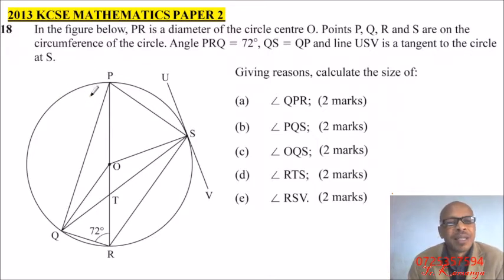So the question says, in the figure below, PR is the diameter of the circle center O. So we have our PR here. P, Q, R, S are on the circumference of the circle.